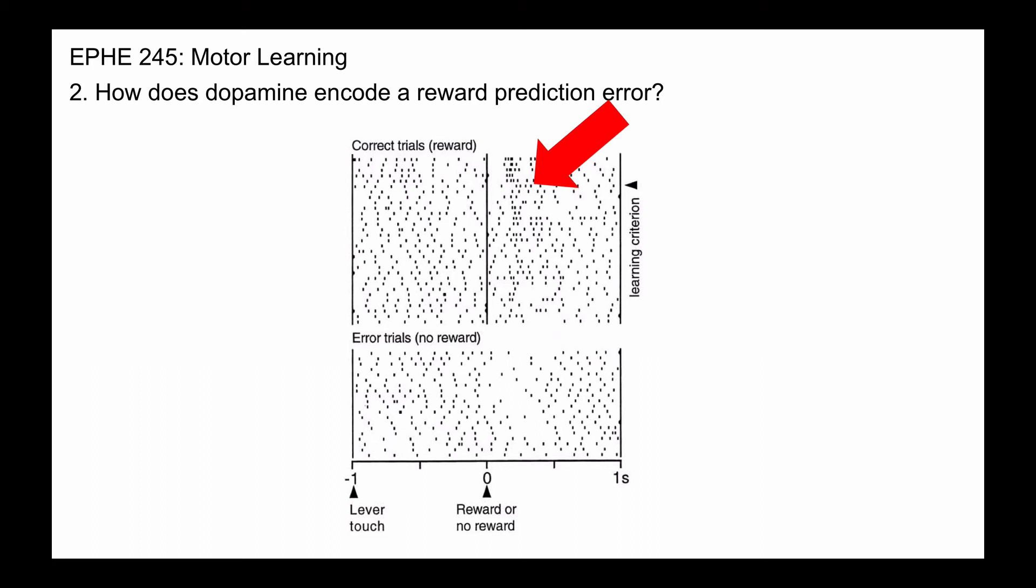In terms of negative prediction errors or errors, interestingly, what they observed was a decrease in firing rate.